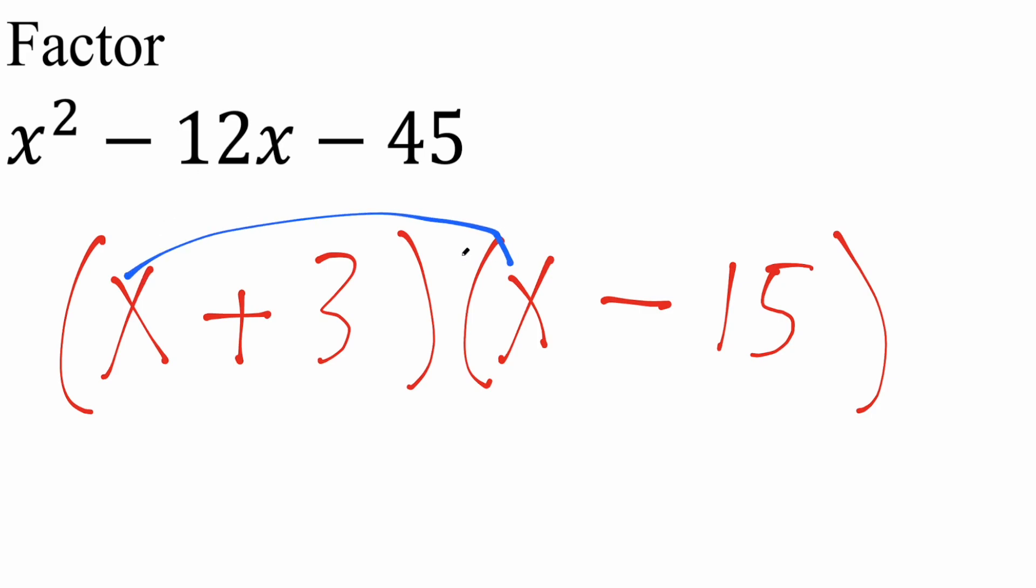So x times x, we know it's going to be x squared. x times negative 15 is negative 15x. 3 times x is going to be positive 3x. And 3 times negative 15 is negative 45.